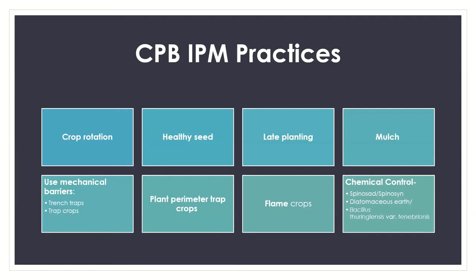Always make sure you have healthy seed. We'll also talk about late planting, since these beetles come up early in spring. If there is nothing for them to eat when they emerge in May — no solanaceous or nightshade plants — they'll die pretty quickly, eliminating your need for control. You can nip that in the bud with later planting, though it can be difficult given our short growing season. Other options include mulching, mechanical barrier options, trap crops, flaming, and some organic-based pesticide control.